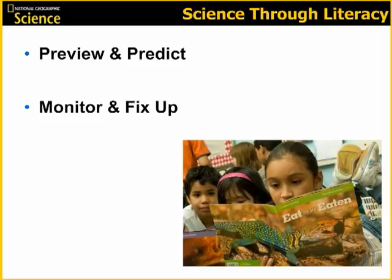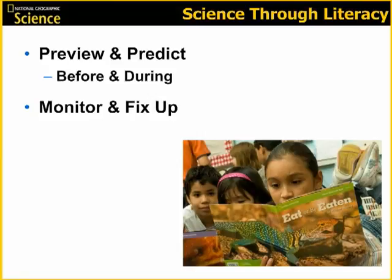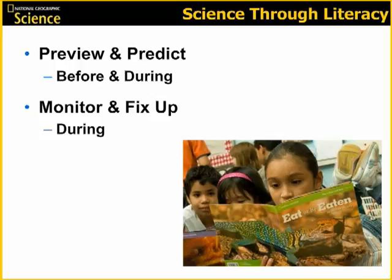Teaching students reading comprehension strategies can help them access science content and support their scientific inquiries. National Geographic Science for Kindergarten focuses on two key reading comprehension strategies. Before and during reading, students preview and predict by looking over the text, forming ideas about how the text is organized and what it says, and confirming those ideas. This strategy will always be taught in the first part of the unit. Students monitor and fix up during reading by thinking about whether the text is making sense, how it relates to what they already know, and identifying and clearing up comprehension problems. This strategy will be taught in the second part of the unit.